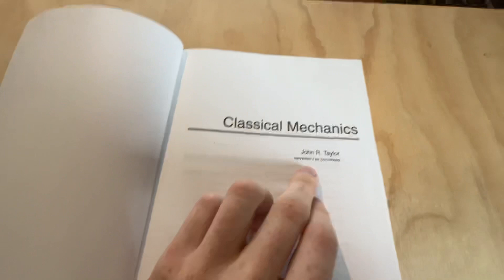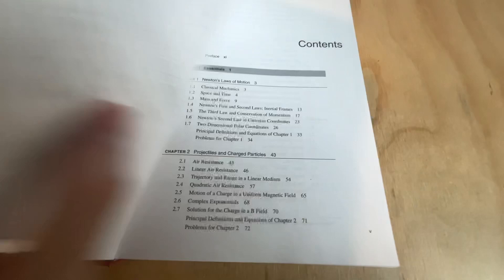Classical Mechanics by John R. Taylor, University of Colorado, printed by University Science Books. The printing is also really good on this, just to point out.